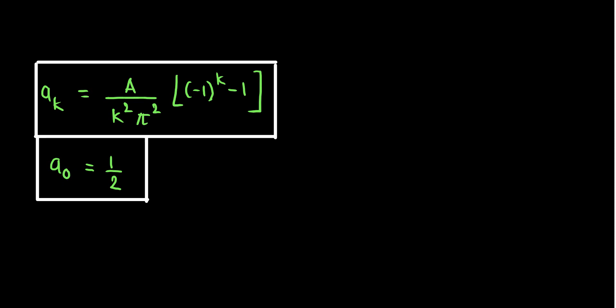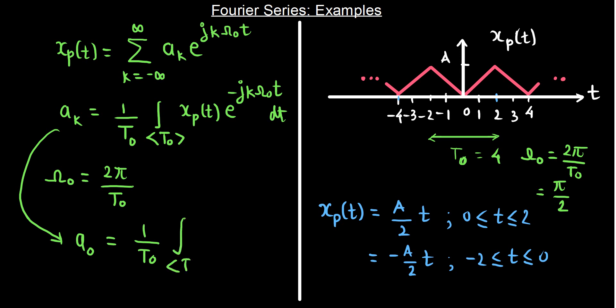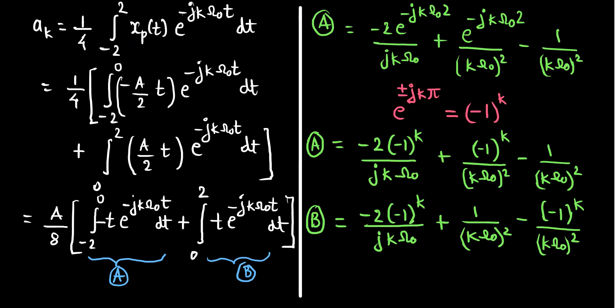To calculate a_0, we simply set k equals 0 in the original equation, which gives 1 over T0 times the integral of x_p(t) over one period. This is simply the DC value, or average value, of the signal. If we compute that, it turns out to be a half, or more generally a_0 over 2.